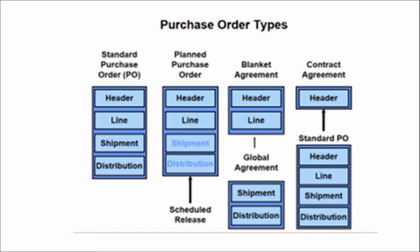In a blanket purchase agreement, we have the header and the line. In the header we put the agreed amount; in the line we put the item — we know the item and can put the price there — but the quantity is unknown at the time of creating the blanket purchase agreement. The blanket purchase agreement can be released by using subsequent blanket releases.